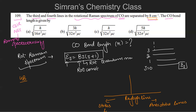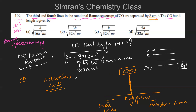For the rotational Raman spectrum, the selection rule is ΔJ = 0, ±2. ΔJ = 0 corresponds to the Rayleigh line, and ΔJ = ±2 corresponds to the Stokes and anti-Stokes lines. So we have a series of Stokes and anti-Stokes lines on either side of the Rayleigh line.